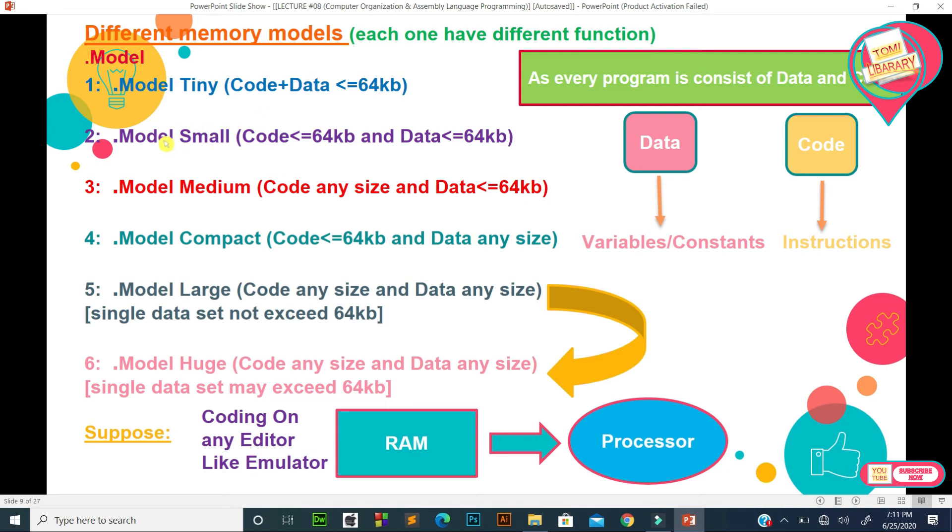When we write .MODEL Small, then code less than equal to 64 kilobyte and also data less than equal to 64 kilobyte. Means separate space is reserved for each.